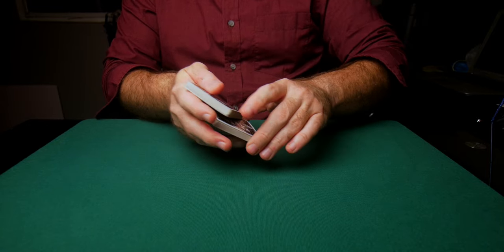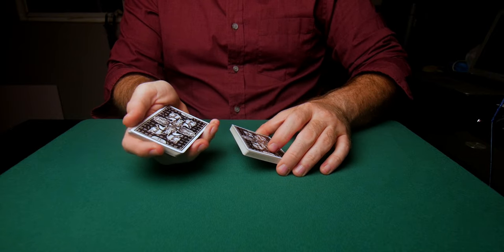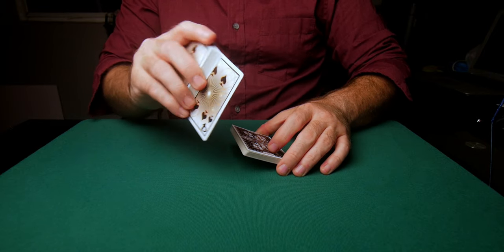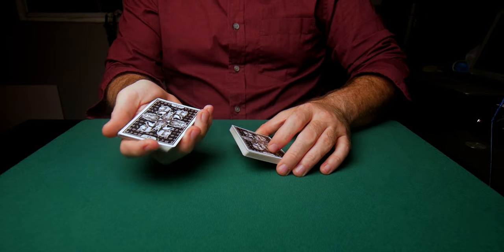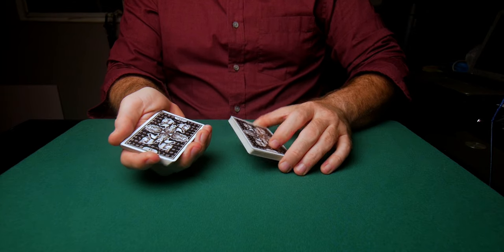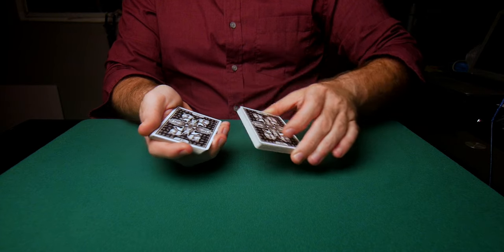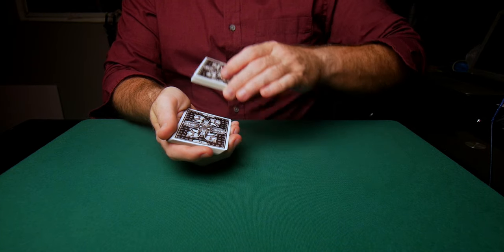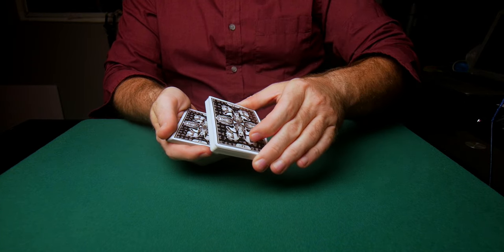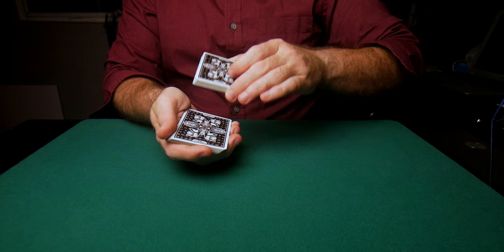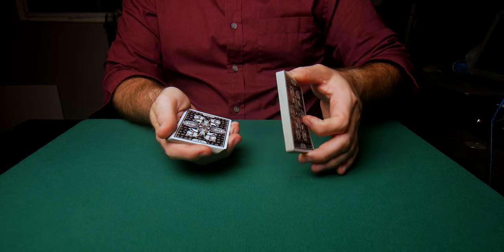You will then swing cut. Remember, this is where the selection is now on your right hand. Once you have swing cut, you will take this packet with all the indifferent cards, and instead of placing it on top, you're going to throw it from the back to the front to generate the friction needed.